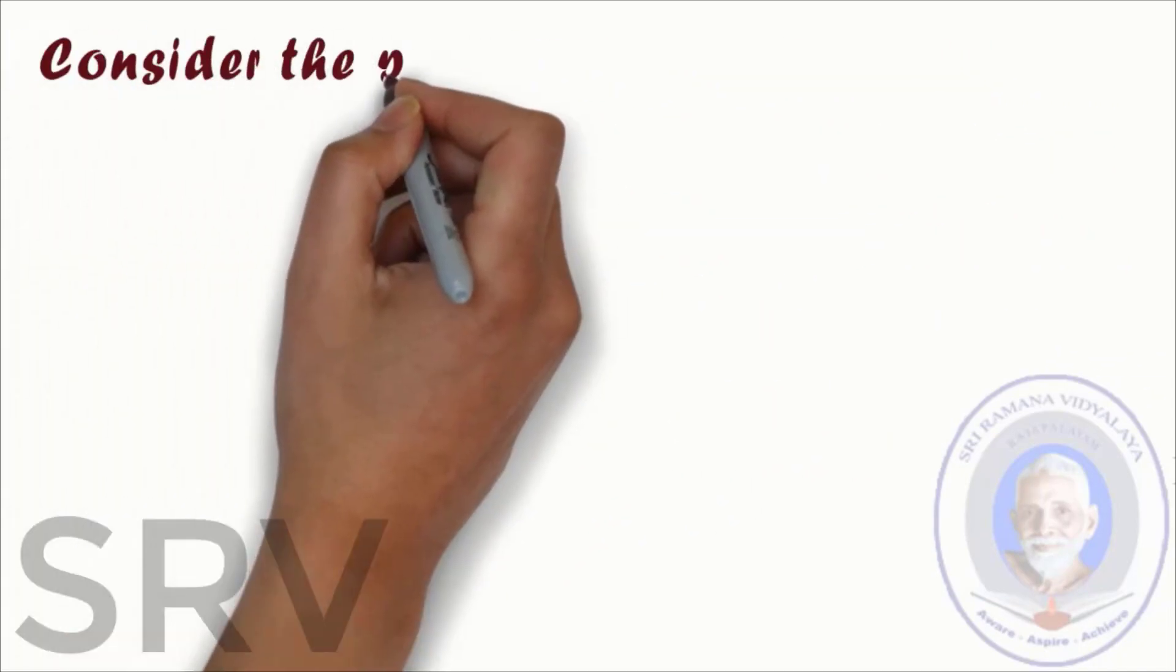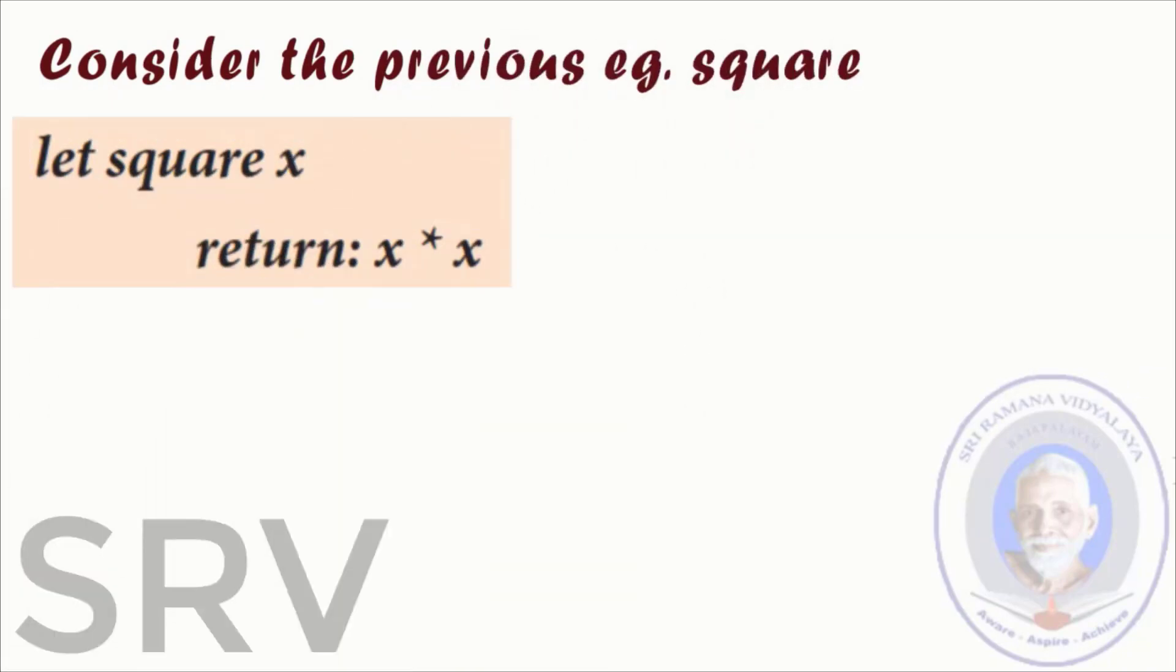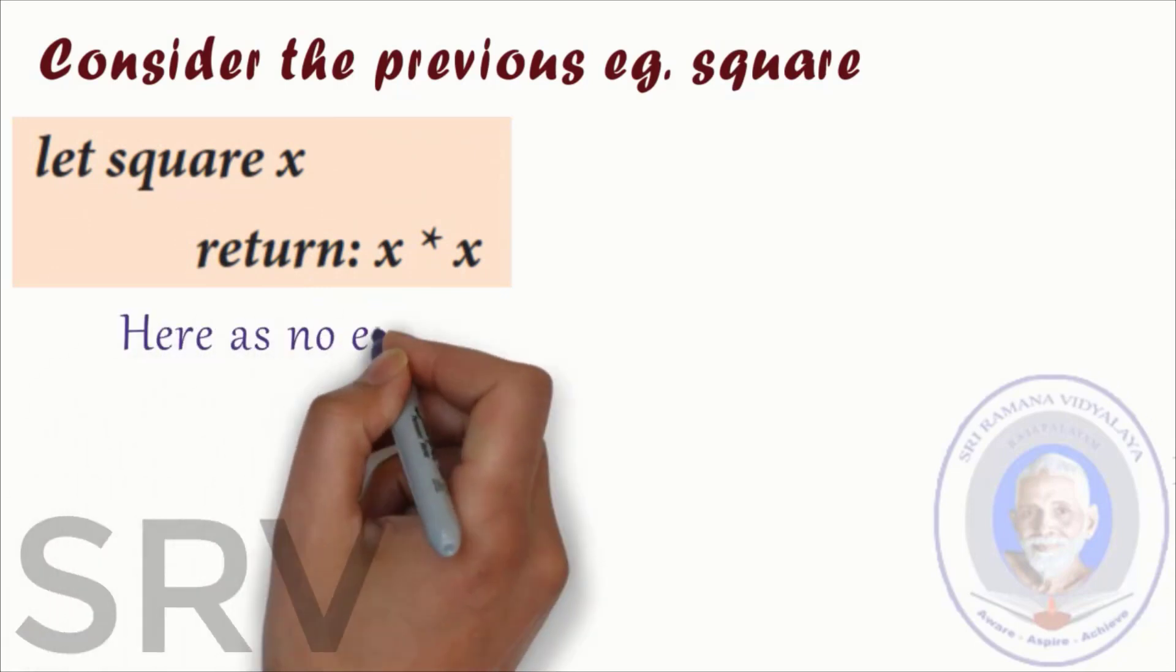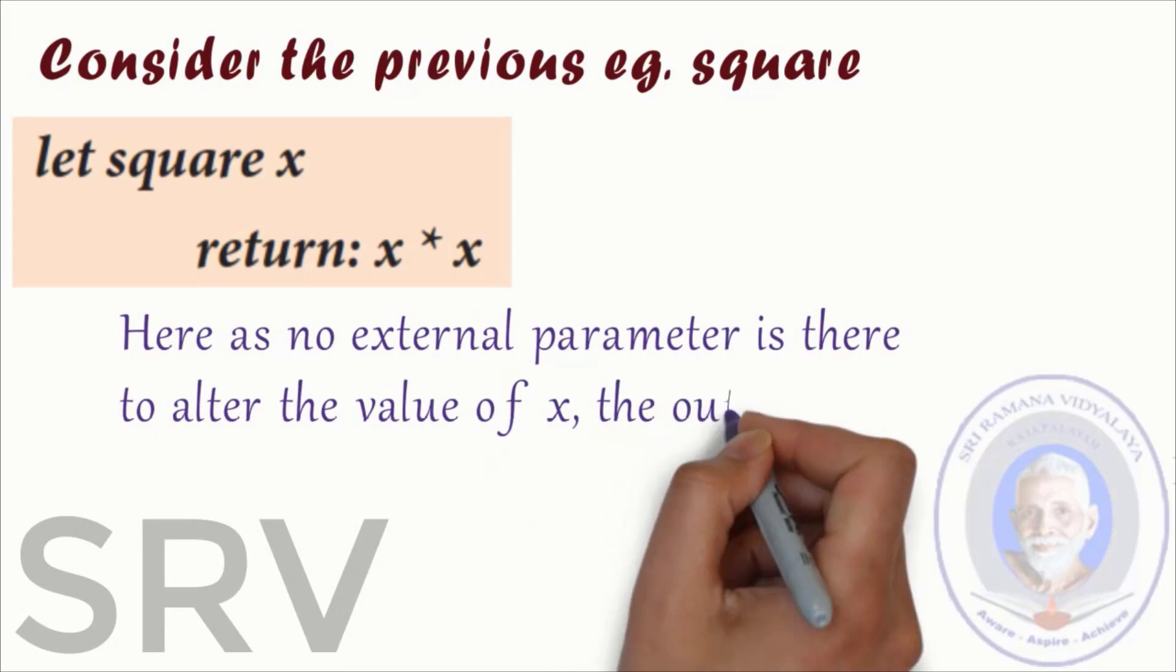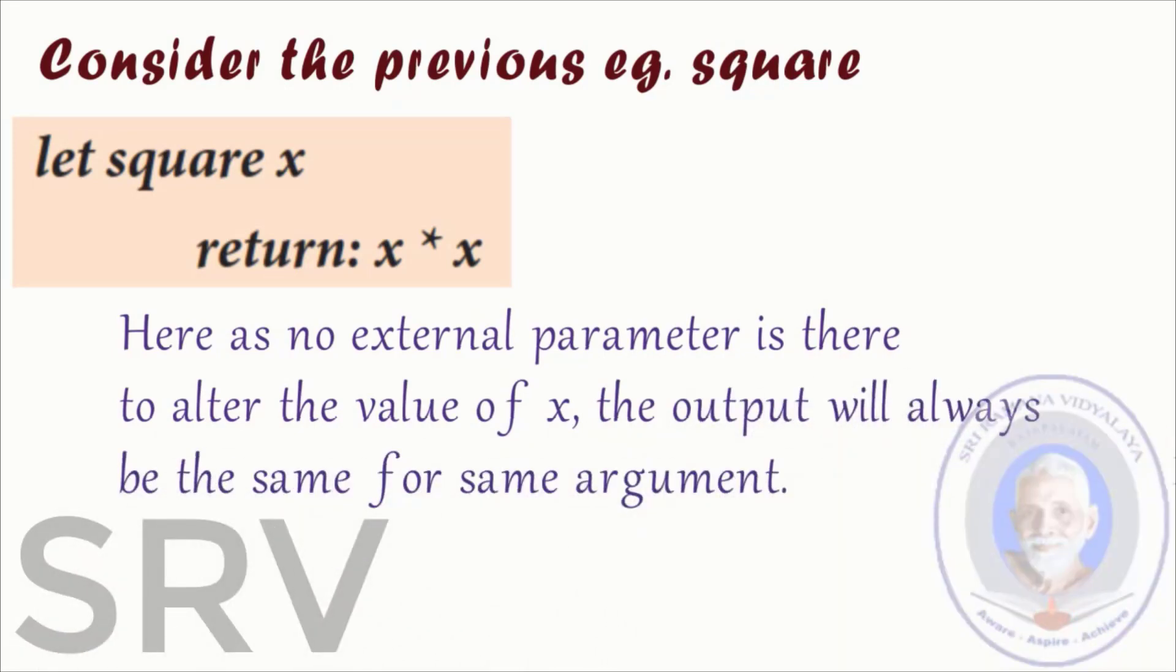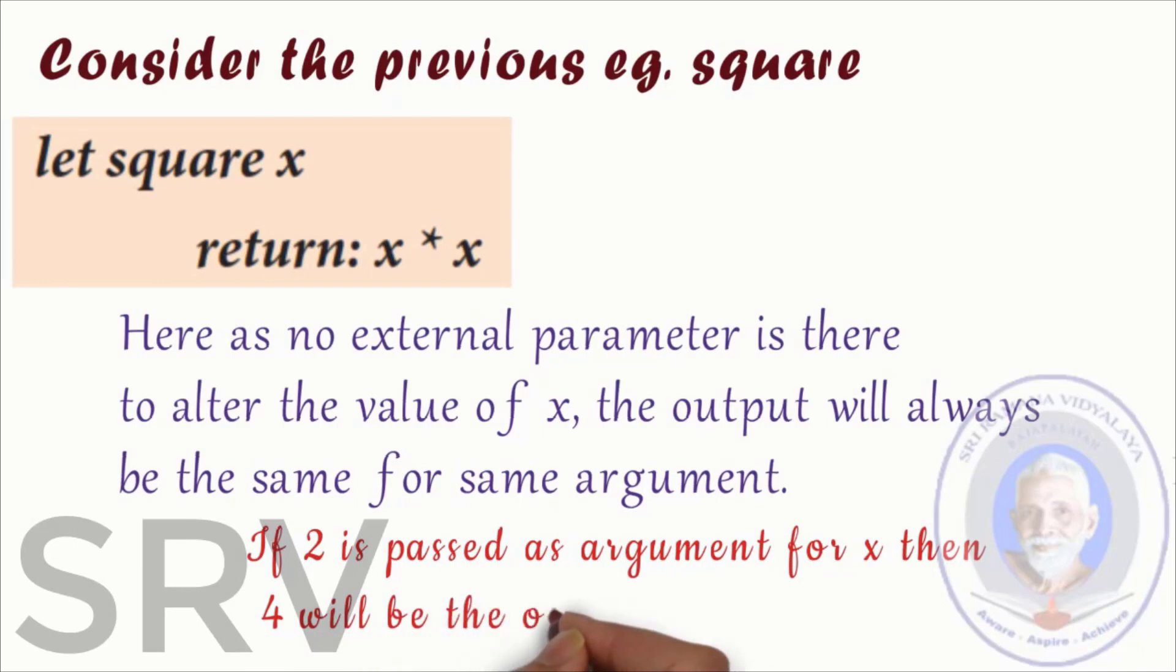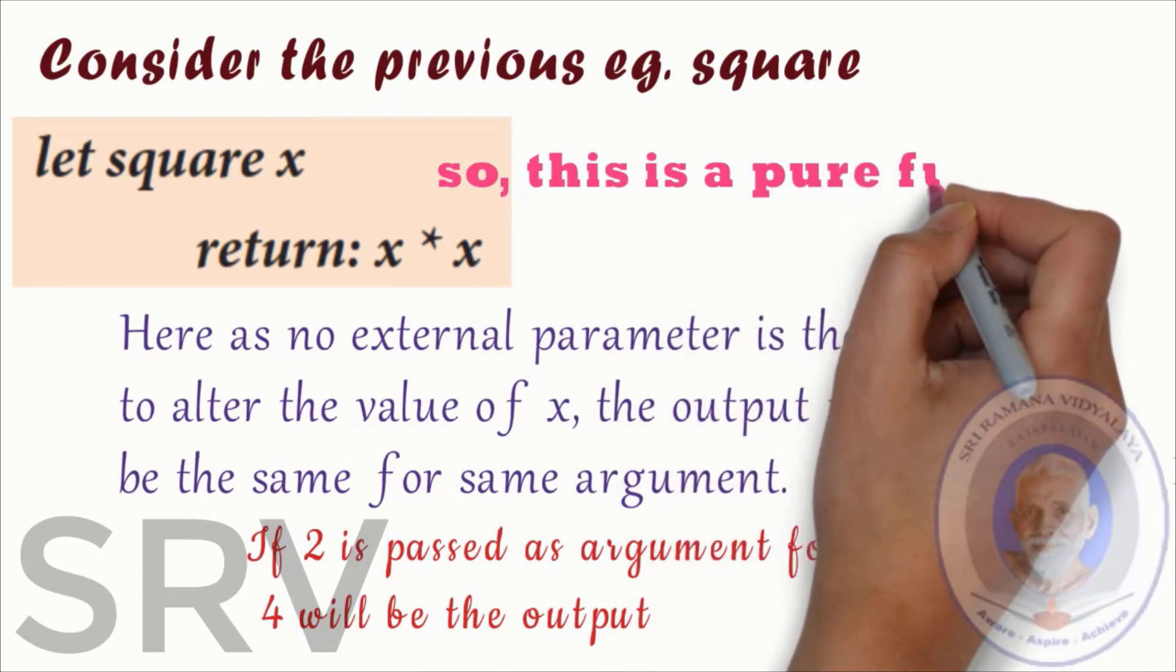Consider the previous example square. Here as no external parameter is there to alter the value of x the output will always be the same for same argument. If 2 is passed as argument for x then 4 will be the output each time. So such functions are called pure functions.